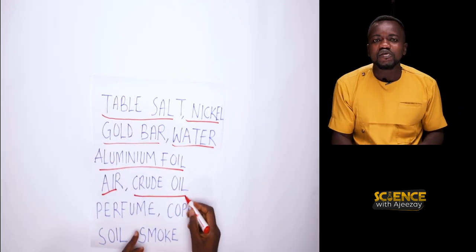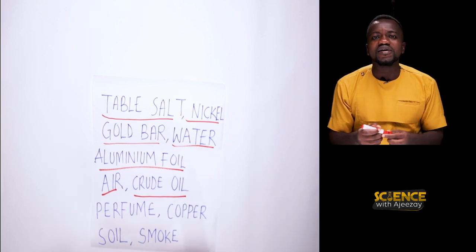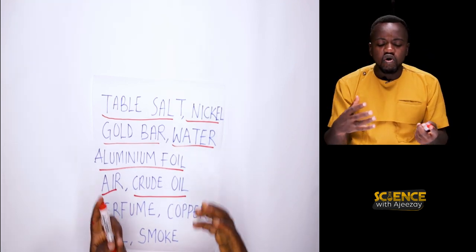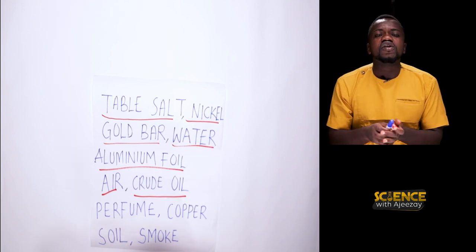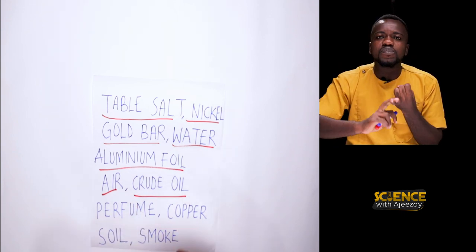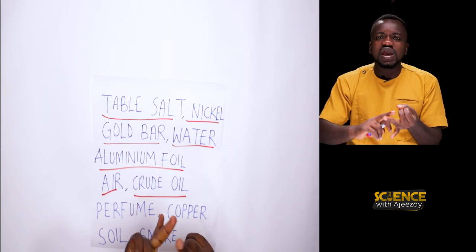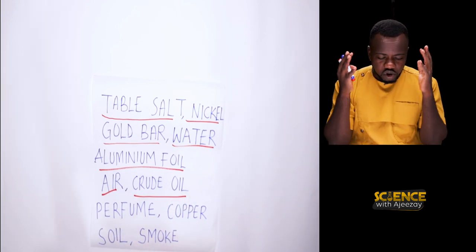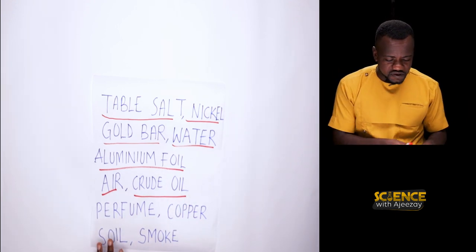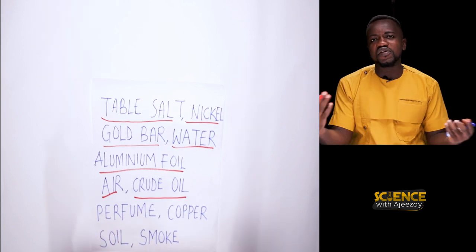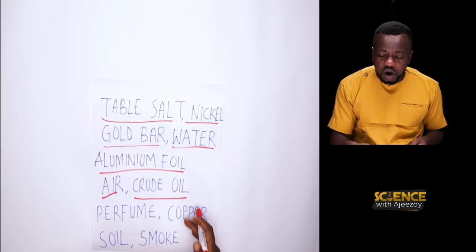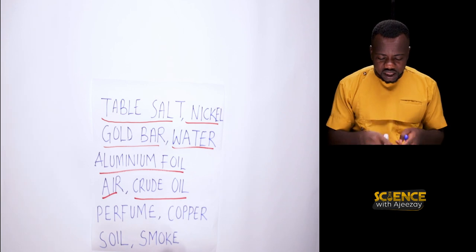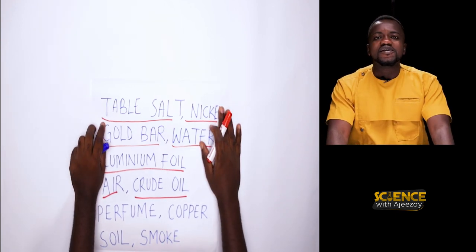We have crude oil — crude oil is also a mixture because it contains petrol, diesel, and other components. Perfume is also a mixture. Copper is an element. Soil is a mixture and smoke is a mixture.